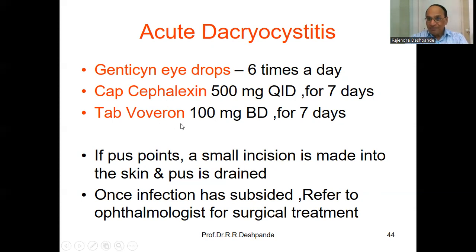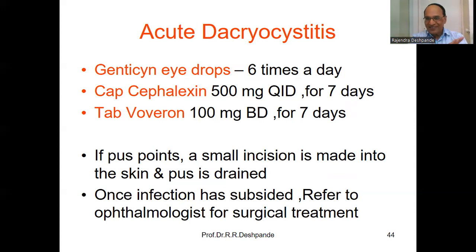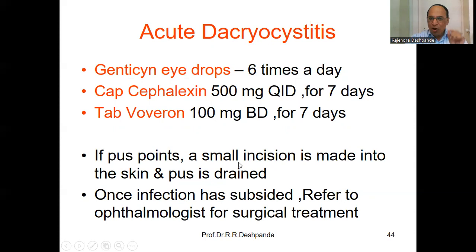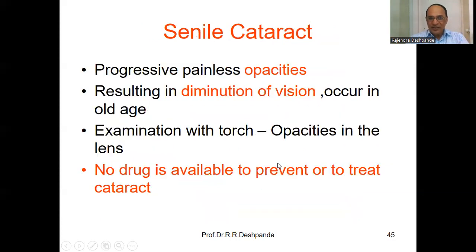Tablet Voveran — NSAID, non-steroidal anti-inflammatory drug — 100 mg morning and evening after food for seven days. If a pus point is small, an incision is made into the skin and the pus is drained. Once the infection has subsided, refer to the ophthalmologist for surgical treatment of the dacryocystitis.